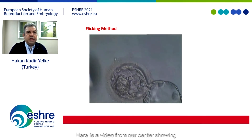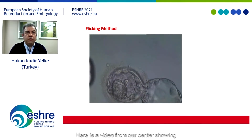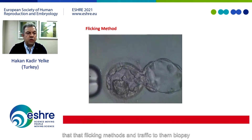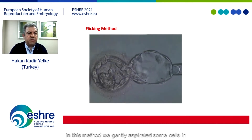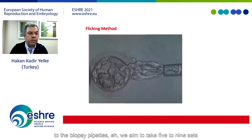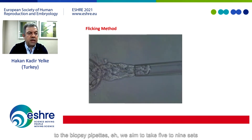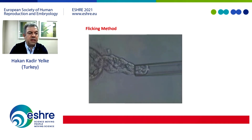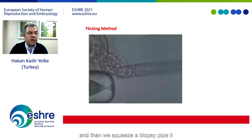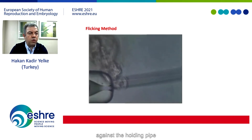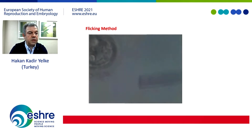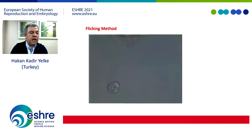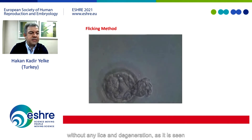Here is a video from our center showing the flicking method in trophectoderm biopsy. In this method, we gently aspirate some cells into the biopsy pipette. We aim to take five to nine cells, and then we squeeze the biopsy pipette against the holding pipette and flick down firmly to detach cells without any lysis or degeneration.